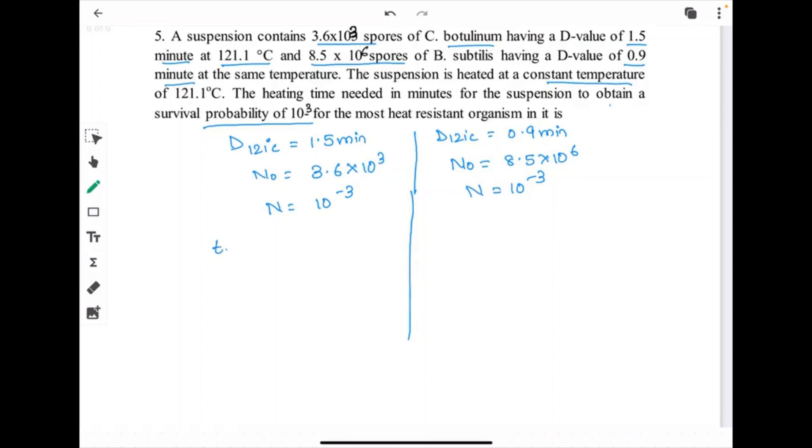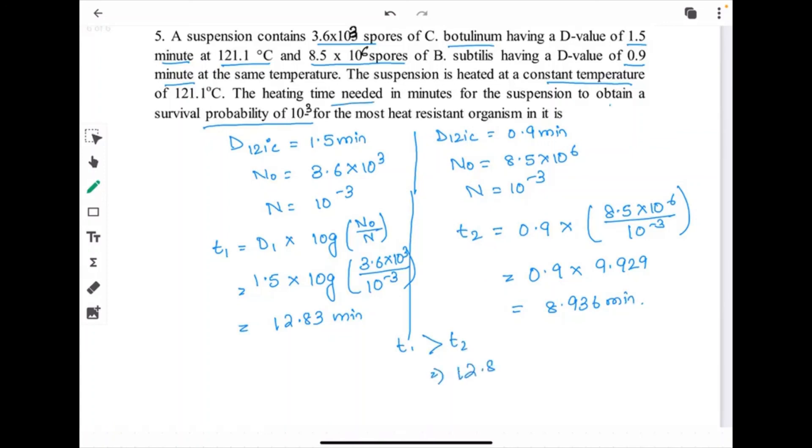Let's find time T1 equals D1 into log(N0/N). What is D1? 1.5 into log(3.6 into 10 to the power 3 divided by 10 to the power minus 3). T1 will be 12.83 minute. Similarly T2: 0.9 into (8.5 into 10 to the power 6 divided by 10 to the power minus 3). 0.9 into this one will be 9.929, so it will be 8.936 minute. T1 is greater than T2, so the heating time will be the greater one, that is 12.83 minute.